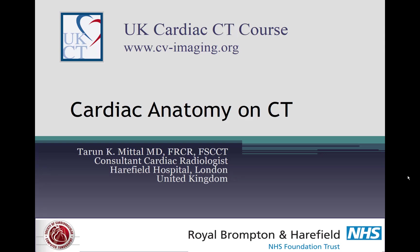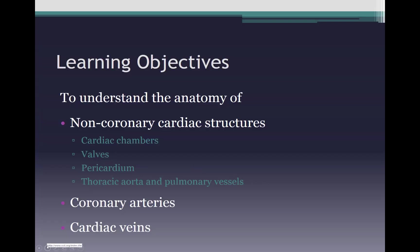Hi, I am Tarun Mittal, consultant cardiac radiologist. In this session I'm going to take you through the anatomy of the heart including the coronary arteries as seen on CT angiography. We will understand the anatomy in three sections: the anatomy of non-coronary cardiac structures including chambers, valves, surrounding pericardium, thoracic aorta and pulmonary vessels; then the coronary arteries; and finally the cardiac veins. CT is an excellent technique to demonstrate anatomy as the images are volumetric, allowing display and manipulation in any plane.